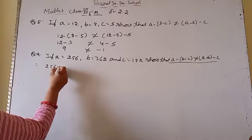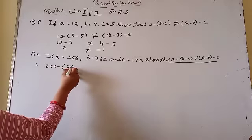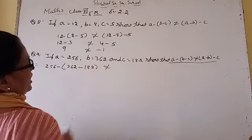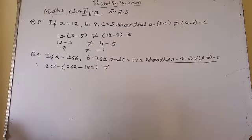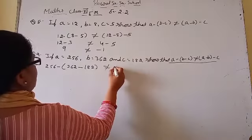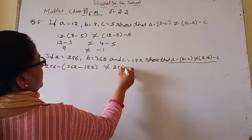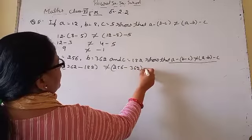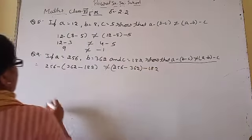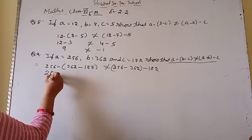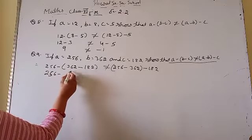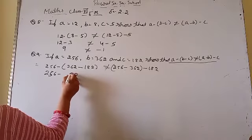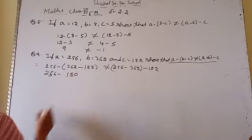LHS: 256 minus (362 minus 182). पहले bracket के अंदर 362 minus 182 करते हैं — 2 में से 2: 0, 6 में से 8: 8 (borrow के साथ), 1 में से 1: 1 — तो 362 minus 182 = 180. फिर 256 minus 180.